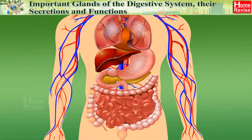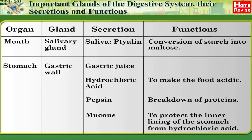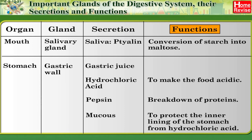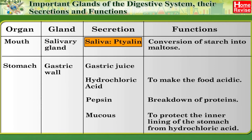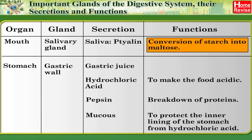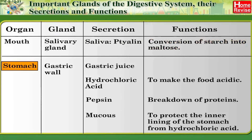Important glands of the digestive system — their secretions and functions: The following table shows each organ or gland, its secretion, and its function. Salivary glands: secretion — saliva (ptyalin/salivary amylase); function — conversion of starch into maltose.